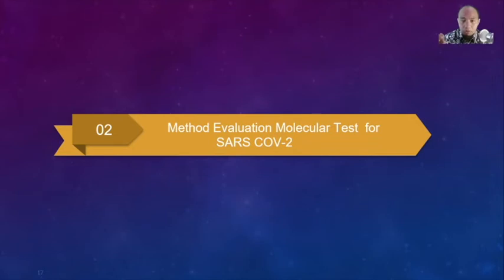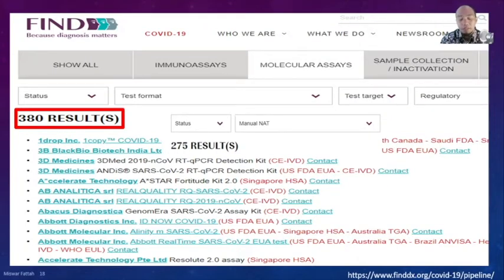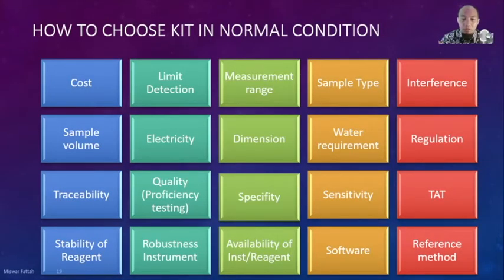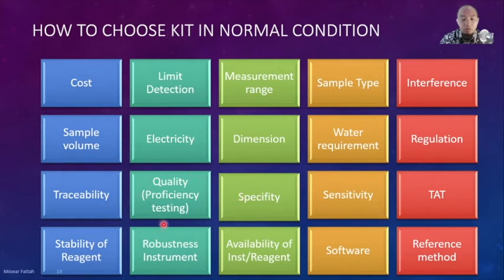A lot of tests are now available for molecular testing, so it is not easy to choose which is better, and some reagent producers are not very well known by clinical laboratory scientists. In normal conditions, we choose based on cost, limit of detection, measurement range, sample type, interference, sample volume, turnaround time, sensitivity and specificity, stability, proficiency testing results, stability of reagent, robustness of instrument, reliability of instrument and reagent, software, and reference method.